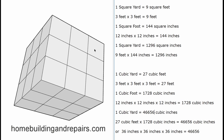To summarize: one square yard equals nine square feet — three times three equals nine. To find cubic measure, you multiply the increments in all three directions. One cubic yard equals 27 cubic feet — three feet times three feet times three feet equals 27. One square foot equals 144 square inches — 12 times 12 — on a flat plane.